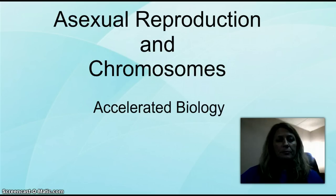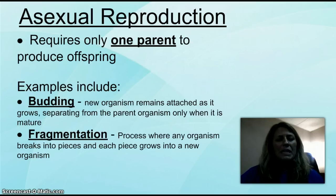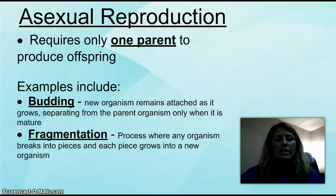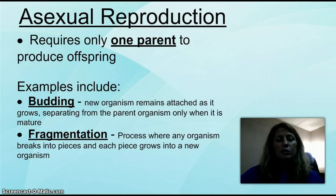Let's go ahead and get started. What is asexual reproduction? It's making any offspring, and it only needs or requires one parent to do that. You don't need a male and a female to produce an offspring.